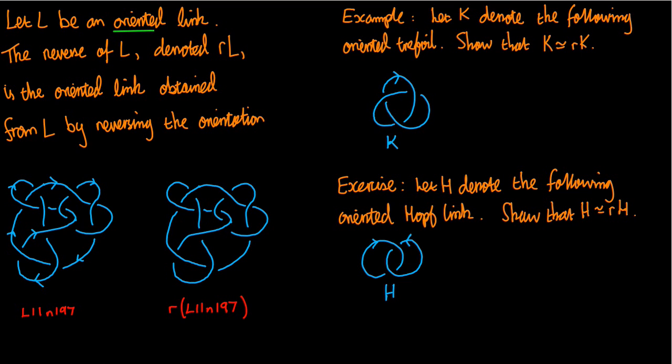Let L be an oriented link. So remember a link can have many different orientations. If we choose one then what we get is an oriented link. Then the reverse of L, which is denoted by RL, that is the oriented link obtained from L by reversing the orientation.